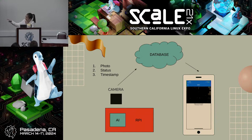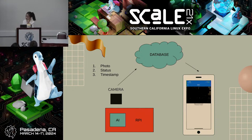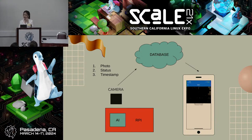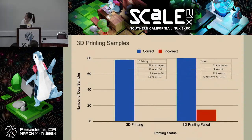The AI model was transferred onto a Raspberry Pi connected to an Arduino camera so I could test it in real life. I ran the Raspberry Pi and the model, 3D printed something randomly, and purposely tried to make it fail or succeed. Every time a picture is taken, it sends the photo, the status, and the timestamp to the database — so users know exactly when a failure might have occurred. That data is then transferred into the app.